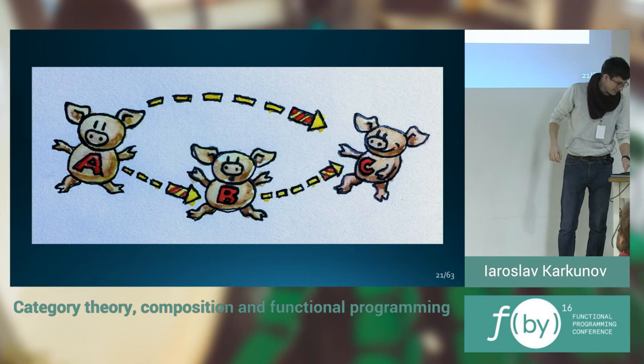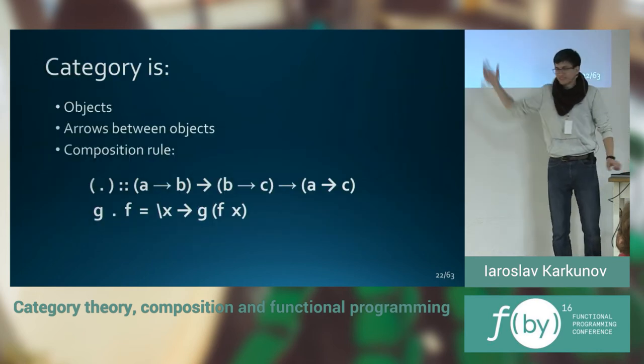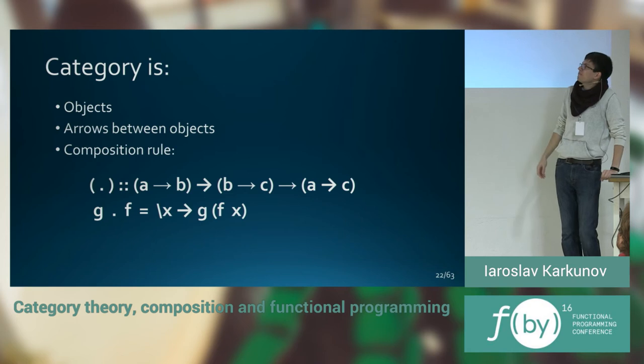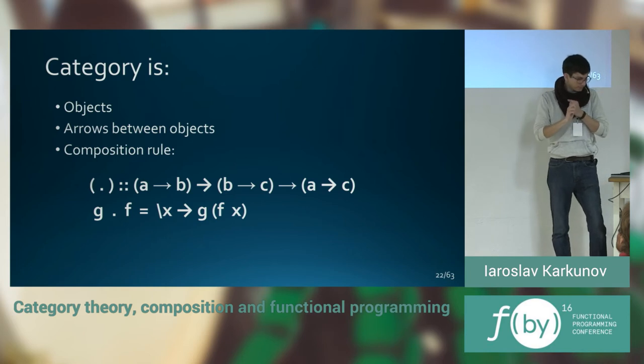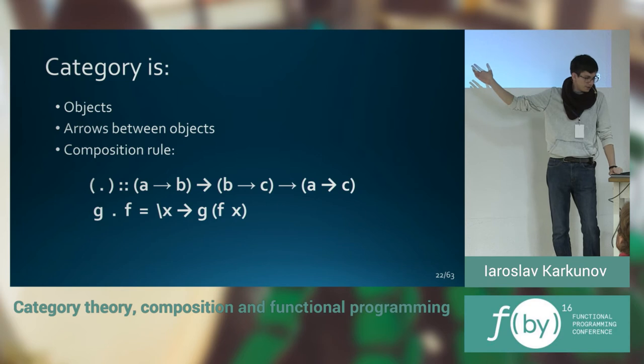If we look at that more abstractly, a category is objects, arrows between those objects, and the rule of composition. Rule of composition here is a function that takes two arrows, as you can see, or functions, from A to B, and from B to C, and returns the next arrow from A to C. Like on the picture with piggies before.